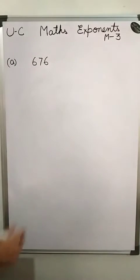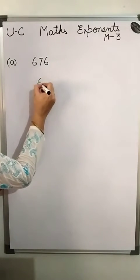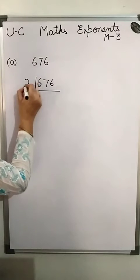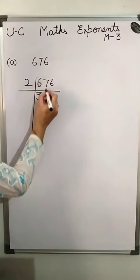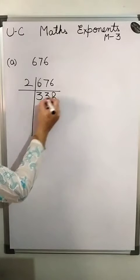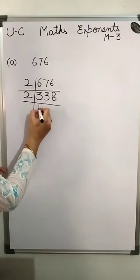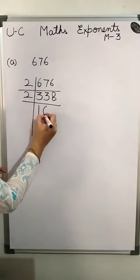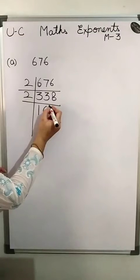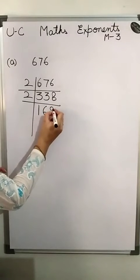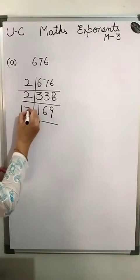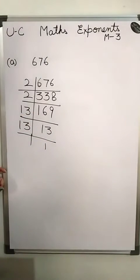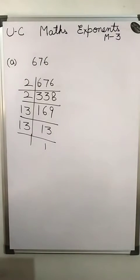Find the prime factorization of 676. We divide this by 2, giving 338; divide again by 2 giving 169; and 169 is divisible by 13 into 13, and 13 divided by 13 is 1. So in this way we can calculate the prime factors of this number.